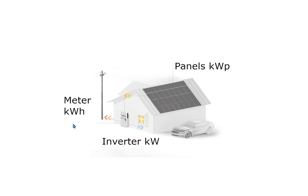Now to kilowatt hours, which is a little bit more complicated because we are looking at energy over time. Energy use changes over the course of a day depending on what appliances you run. That's why the use of energy is a bit more complicated to express. One kilowatt hour is the same as 1000 watts used over one hour. If you use 2000 watts the next hour, you have used two kilowatt hours that second hour. That's how you measure electricity use over time.